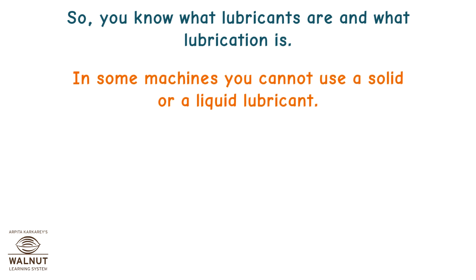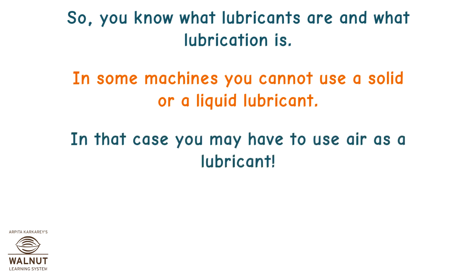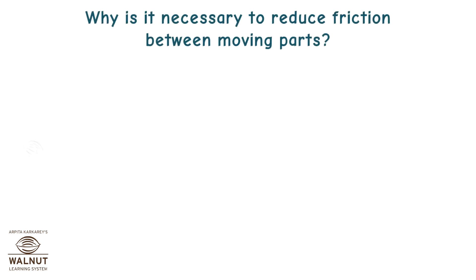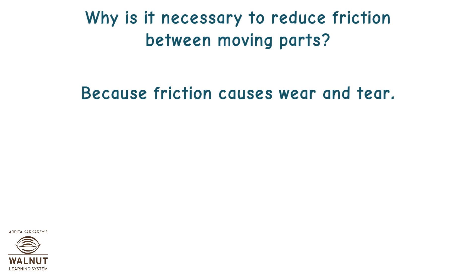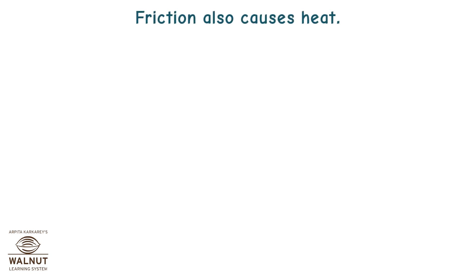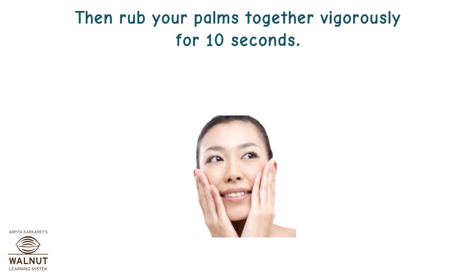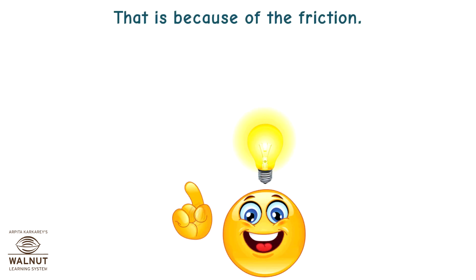In some machines, you cannot use a solid or a liquid lubricant. In that case, you may have to use air as a lubricant. The air cushion between moving parts reduces friction. Why is it necessary to reduce friction between moving parts? Because friction causes wear and tear, which is undesirable. Friction also causes heat. Put your hands to your cheek and feel their temperature, then rub your palms together vigorously for 10 seconds. Do you feel them warm up? Yes, you do — that is because of friction. Friction causes heat.